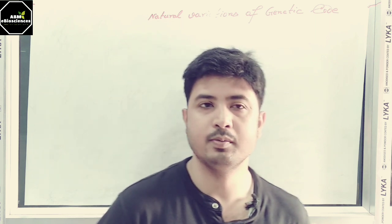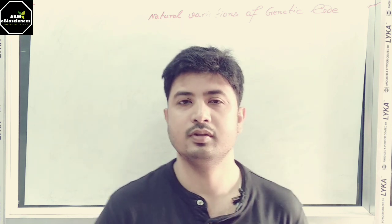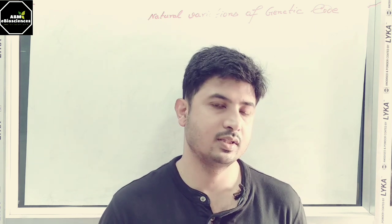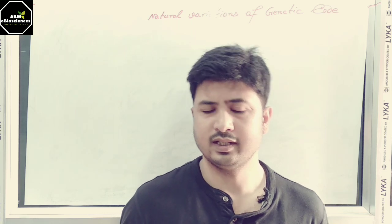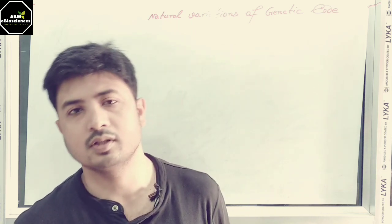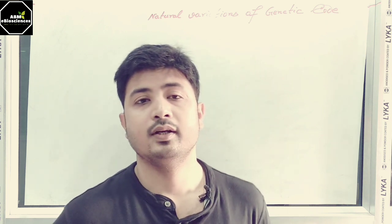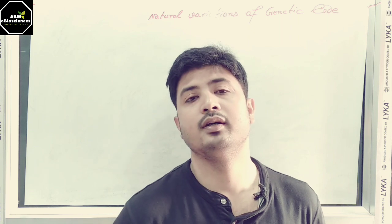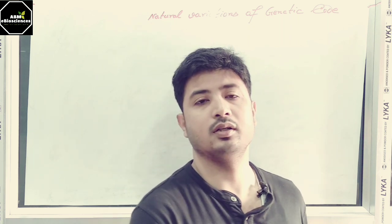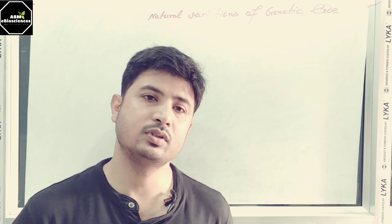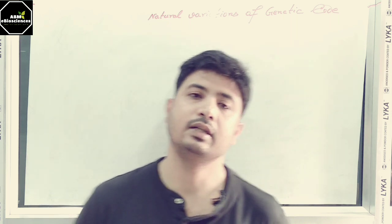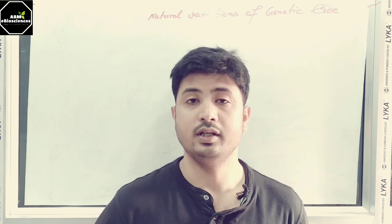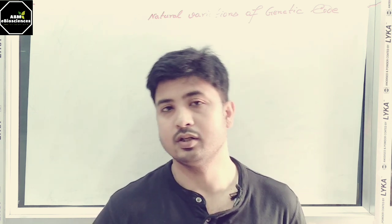Hello and welcome to another class of ABM Viva Sciences. This is Abhishek with you. Today I'll be talking about the variations of genetic code. The normal genetic code has 64 codons — 61 can be coded and 3 are stop codons. The basic things you already know, but the variations are not so available in all the books or on YouTube, so I made this class for you. Let's start.